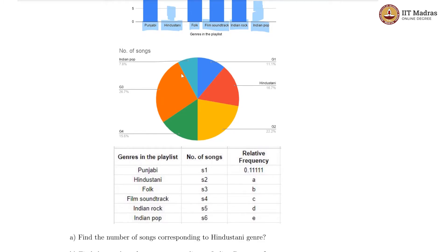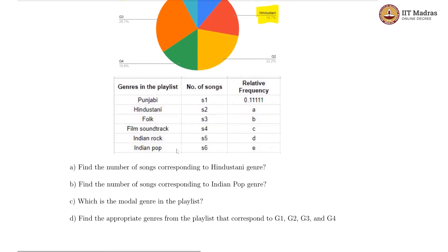The pie chart is presumably for the same data. We have Indian pop and Hindustani given here with percentages. The rest of them are unnamed. We know the percentages, but they're just named g1, g2, g3, g4. And lastly, we have this frequency table which looks mostly unfilled. We just given the number of songs as variables and relative frequency also variables except this one particular relative frequency for the Punjabi genre.